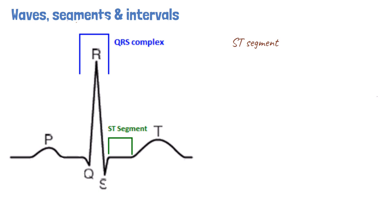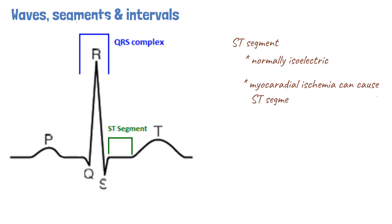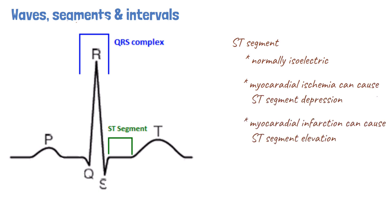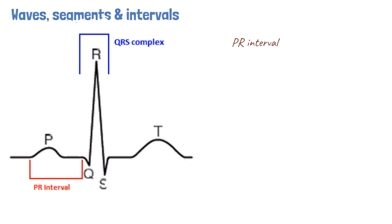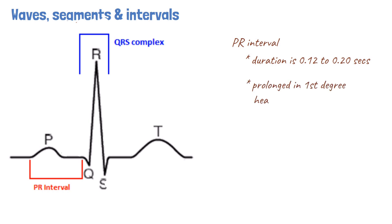The other major segment is the ST segment, which commences at the end of the S wave and ends at the beginning of the T wave. The ST segment is also isoelectric under normal circumstances. The most important causes of ST segment deviation are myocardial ischemia and infarction, with myocardial ischemia causing ST depression and myocardial infarction causing ST elevation. The PR interval commences at the start of the P wave and ends at the start of the QRS complex. It represents the time taken for the electrical impulse to be conducted through the AV node, and is between 120 ms to 200 ms, that is 3 to 5 small squares under normal circumstances. The PR interval is prolonged in the presence of first degree heart block and is usually short in the presence of certain pre-excitation syndromes.